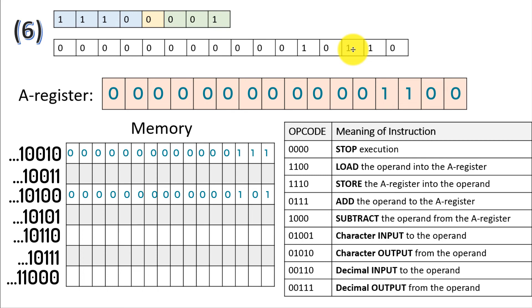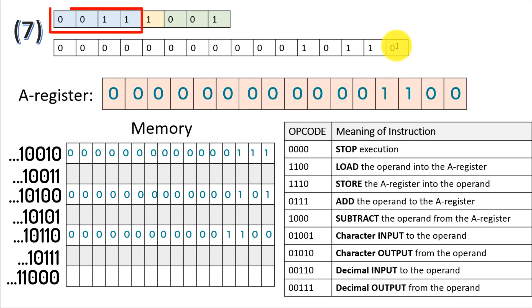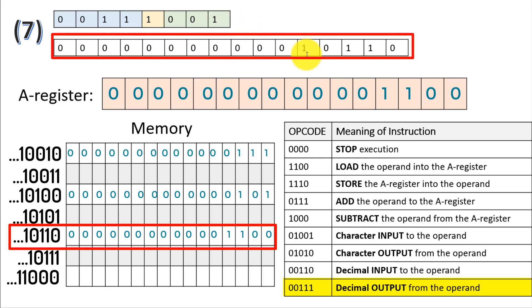The next instruction, instruction 6, is 0110, using direct mode addressing. 0110 means to store the A register into the operand. Since we are using direct mode addressing, the operand is an address, so we take whatever's in the A register and store it at this memory location. And the final instruction, 0011, indicates a decimal output from the operand. Because we are using direct mode addressing, we go to this memory address, retrieve the value, and output it to the user.